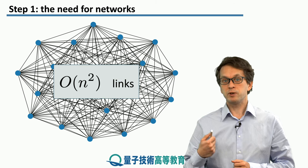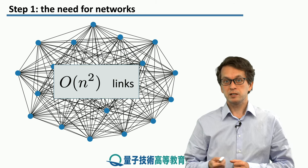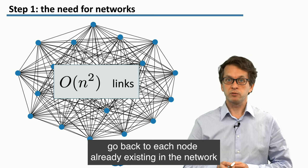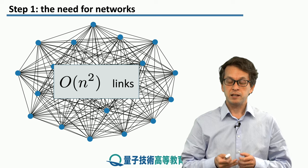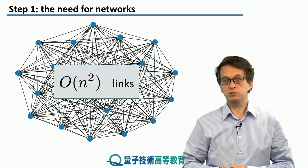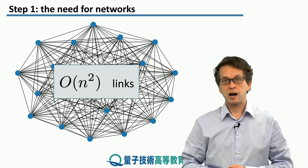Further complication is that if we add a new node to the network, just by adding a new node, we have to go back to each node that is already existing in the network and install new hardware with a dedicated link to this new node. So, how does it work? How do we communicate in real life?